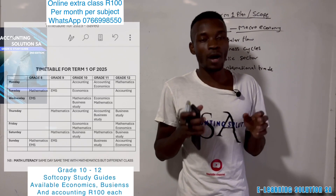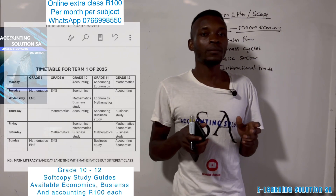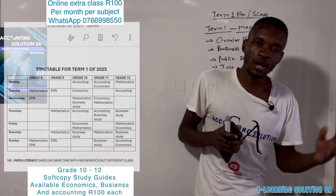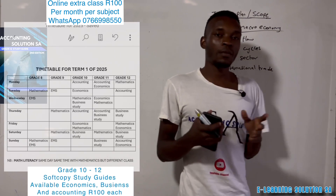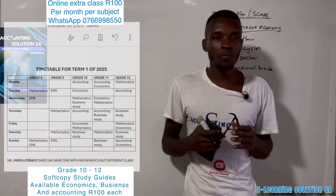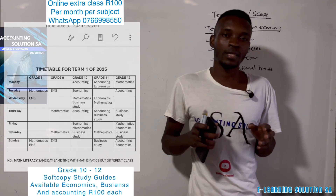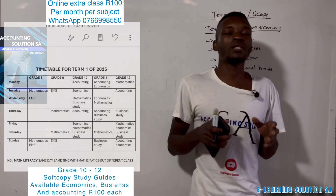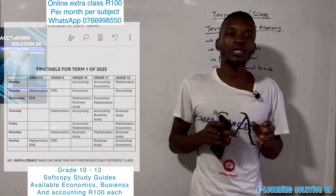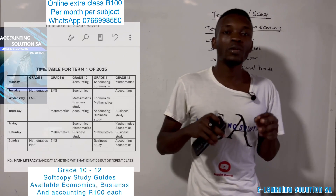Study guides for Accounting Solution and E-Learning Solution are available for Business Studies, Accounting, and Economics. They are only 100 rand per copy — soft copy only, not hard copy, because printing the many pages would be more expensive. The soft copy is protected by a password.